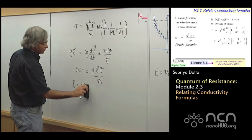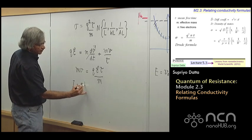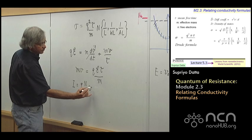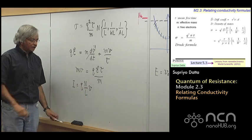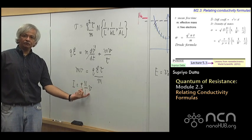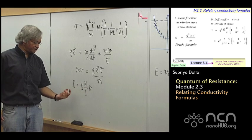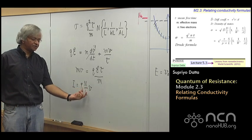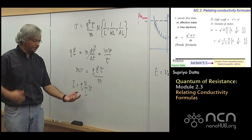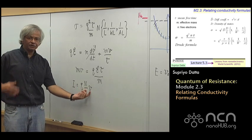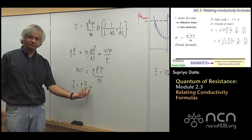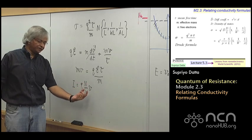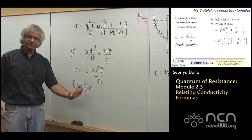And I can take the m here. And then the argument goes that the current is, that the current depends on, is given by QNV. I guess if you are doing this in one dimension, it's the number of electrons per unit length times V.